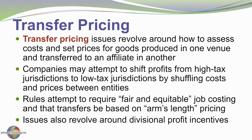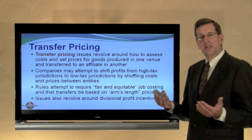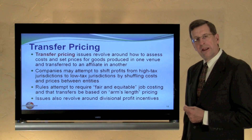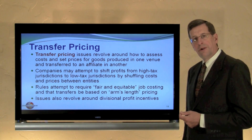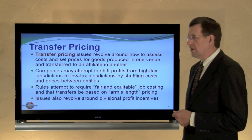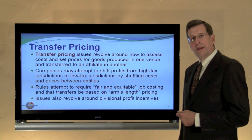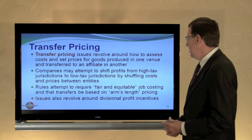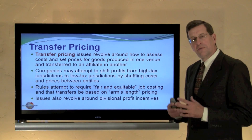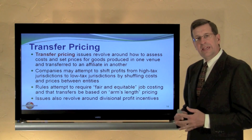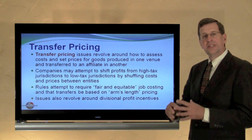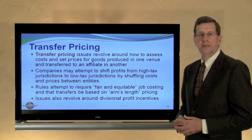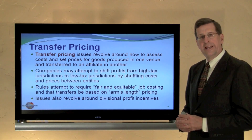Transfer pricing issues also revolve around divisional profit incentives. If divisional managers compete with one another, they may argue about costs attributable to products they produce in terms of determining profits for measuring bonuses. The job cost system needs to support a fair and equitable process for determining and assigning costs to products — despite the arbitrary nature of certain allocations, it ought to be reflective of the actual cost incurred by the organization in producing what they deliver to another customer or affiliated entity.